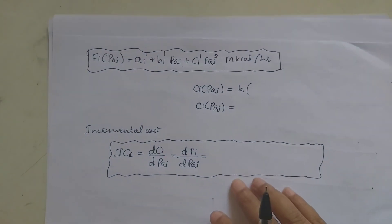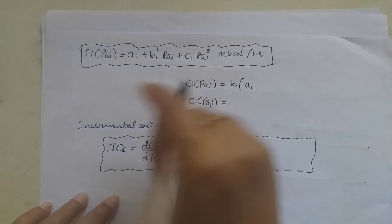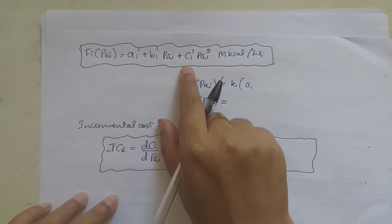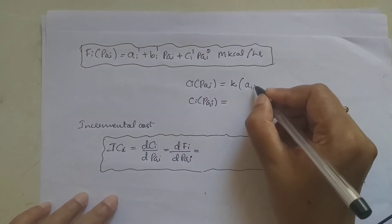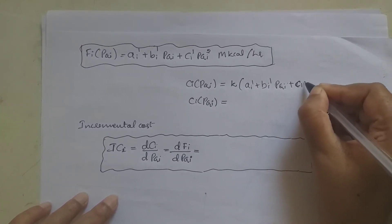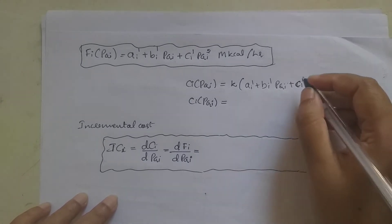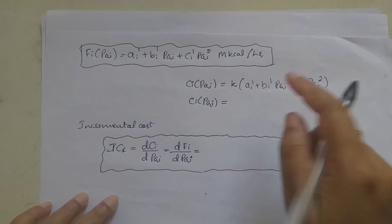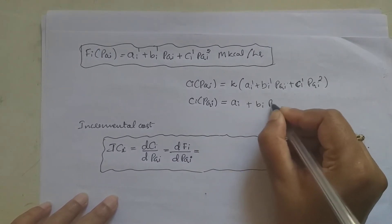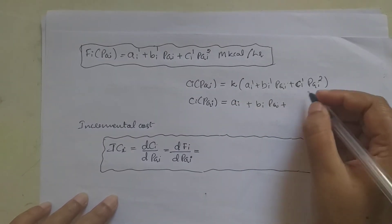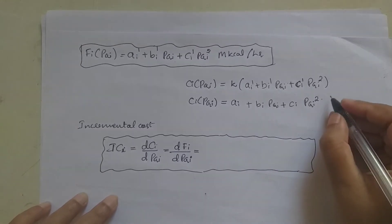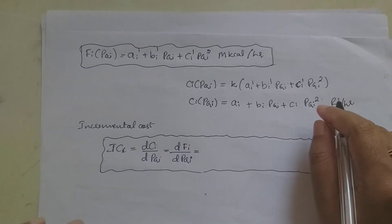Therefore, Ci(PGi) = K × Fi(PGi) = K × (Ai' + Bi' × PGi + Ci' × PGi²). Defining Ai = K × Ai', Bi = K × Bi', and Ci = K × Ci', we get Ci(PGi) = Ai + Bi × PGi + Ci × PGi². The unit is rupees per hour.